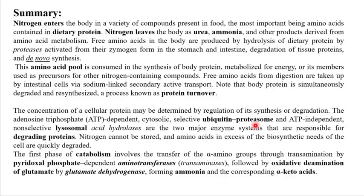There are two steps in nitrogen removal. First, transamination: the amino group is transferred from the amino acid to alpha-ketoglutarate, producing glutamate. Then, deamination: the amino group is removed from glutamate to produce ammonia, and the corresponding alpha-keto acid — the carbon skeleton — remains.